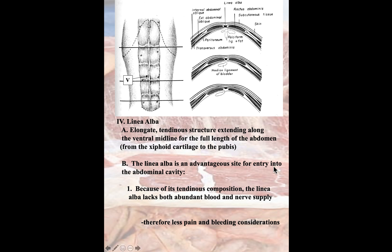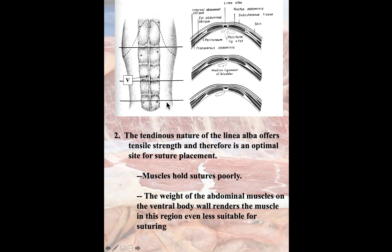The linea alba is commonly used as the site of entry into the abdomen because tendons in this area have low blood supply and low nerve supply. So we are not afraid of bleeding during surgery, and the animal will not be sensitized. It is a very good site, especially in small animals, to open the abdomen. There is a lack of abundant blood and nerve supply; therefore, there is less pain and bleeding consideration.